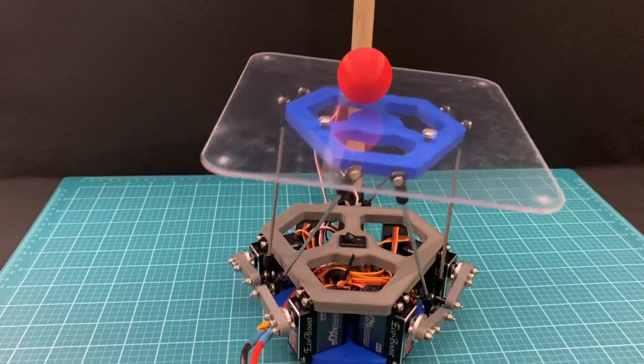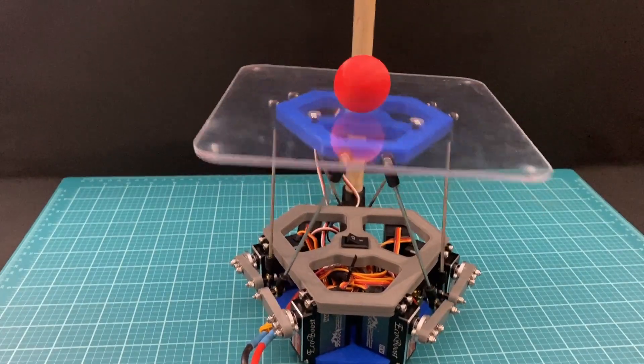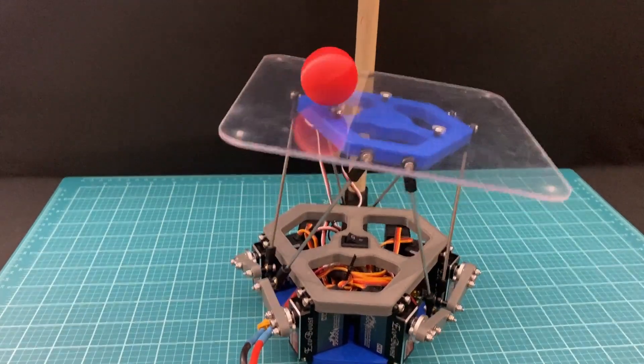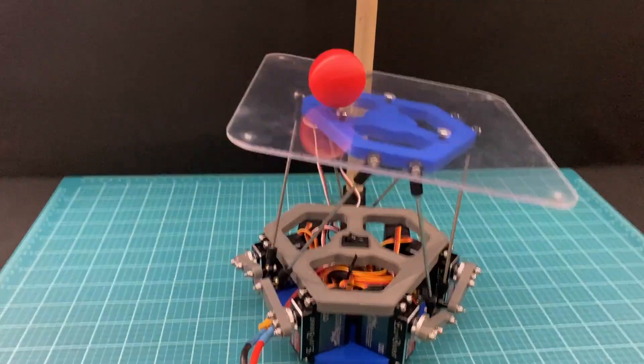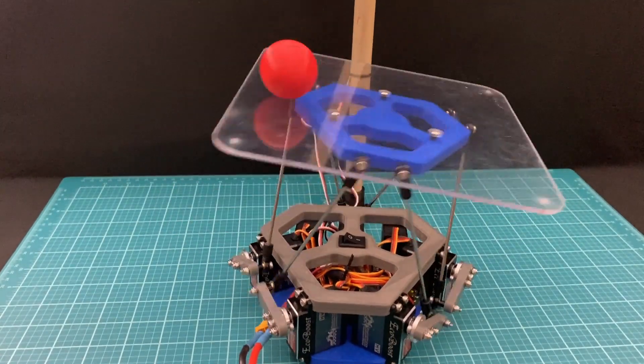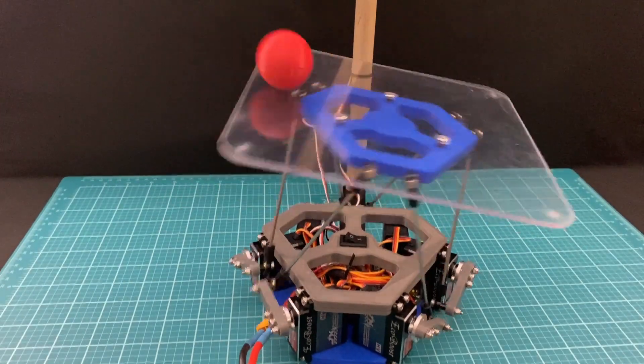If the PID algorithm isn't tuned properly, you can also get the robot to do some pretty cool tricks. Here, the output is way too high, so it swirls the ball in a circle. Because the robot is hypersensitive to the ball's position and velocity, the ball can never reach a state of equilibrium.